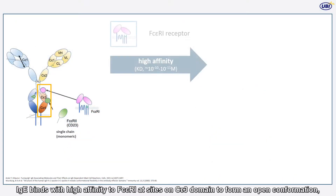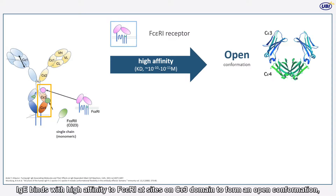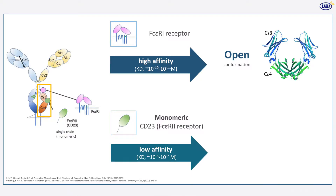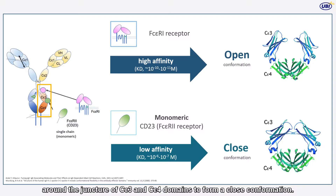IgE binds with high affinity to FC-Epsilon-R1 at sites on the C-Epsilon-3 domain to form an open conformation, while it binds with low affinity to a single chain of the CD-23 receptor around the juncture of C-Epsilon-3 and C-Epsilon-4 domains to form a closed conformation.